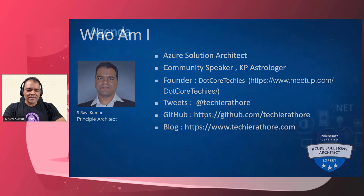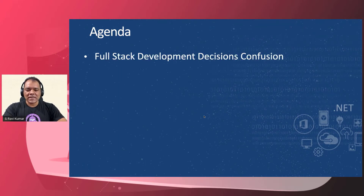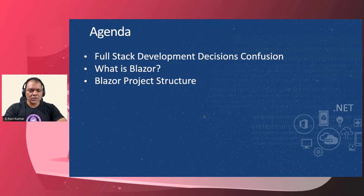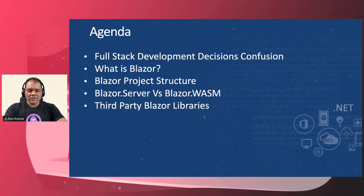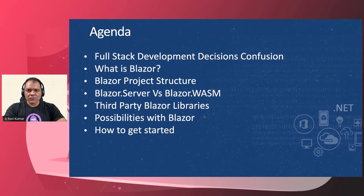Without further ado, let's get started with the agenda for today. We'll talk about full stack development decision confusions — what is full stack development, what are the confusions developers face. Then we'll talk about what is Blazor and how it solves this problem. I'll show you the Blazor project structure, what are the controls, how it works. Then we'll see the difference between various Blazor hosting models, some third party libraries available for Blazor, future possibilities, how to get started, and then I'll take some questions.